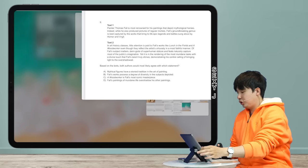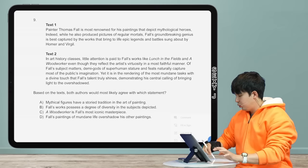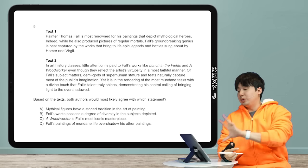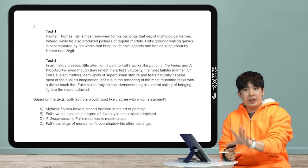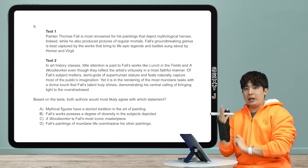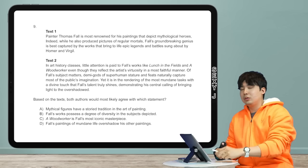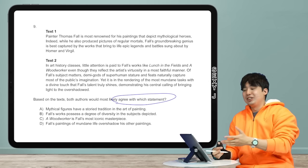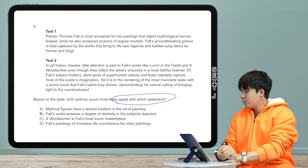We're back with the cross-text agreement question — the exception, not the rule, as I said at the end of the last video. Cross-text questions are very rare, only one per test. On the blue book they haven't shown this yet, but Khan Academy has them, and you guys wanted it. How do you know it's an agreement question? The question specifically says 'agree.' That simple. If they ask what they'd agree on, it's an agreement question.